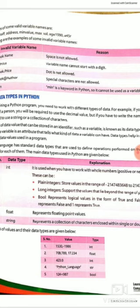The type of data value that can be stored in an identifier such as a variable is known as its data type. The data type of a variable is an attribute that tells what kind of data a variable can have.